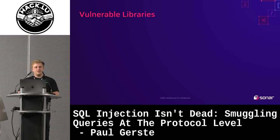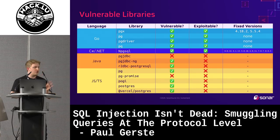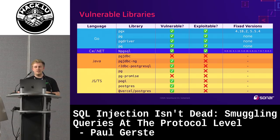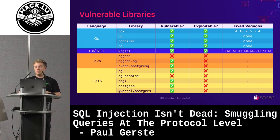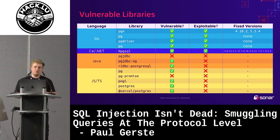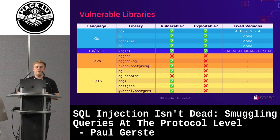After finding these vulnerabilities, we checked which libraries are affected. For Go, all four libraries we looked at were vulnerable and exploitable; unfortunately only one fixed it after we reported. Others ignored us or went silent. In C# / .NET, one was vulnerable and exploitable, and they fixed it with backports to older branches. In Java and JavaScript, some libraries had the theoretical bug but were not exploitable due to other constraints — which I'll explain shortly.